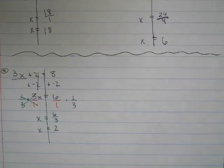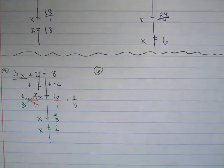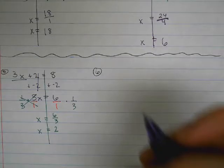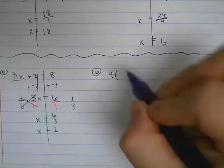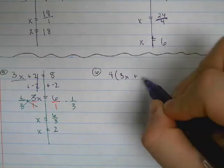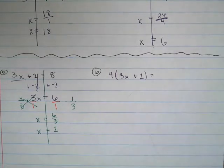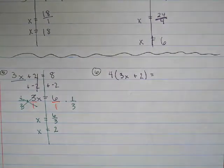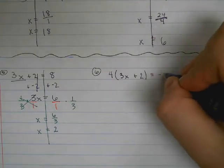One more. So this is when we have to do our distributive property first. We'll have 4 times the quantity 3x plus 2 equals negative 4.